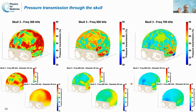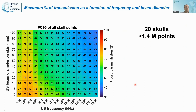Depending on where the transducer is located, transmission will be higher or lower. For all those configurations, we determined the 95th percentile in order to find the maximum transmission realistically transmitted through the skull for a given frequency and ultrasound beam diameter on the skull surface. We did this on 20 skulls, considering more than 1.4 million points, and these are the transmissions obtained.